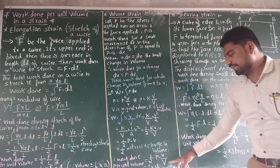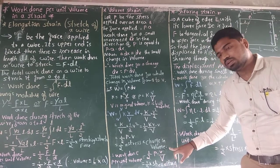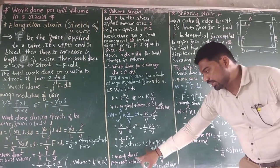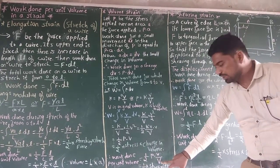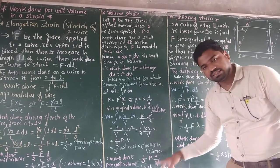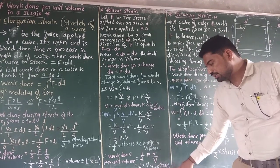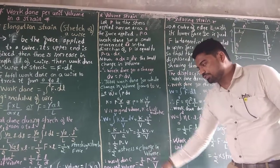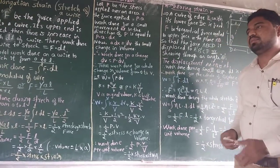But we want work done per unit volume. Dividing by capital V: work done per unit volume equals (1/2)·P·(small V / capital V). Here P is stress and small V divided by capital V is volume strain. Therefore, work done per unit volume in case of volume strain equals (1/2)·stress·strain.